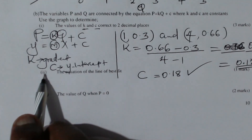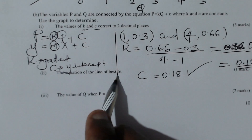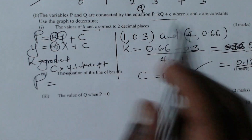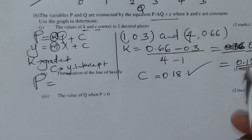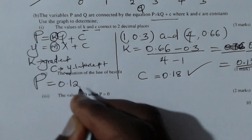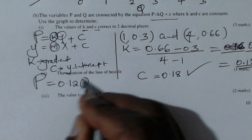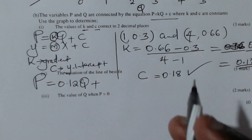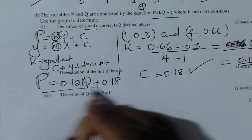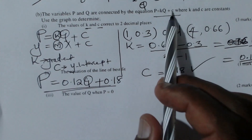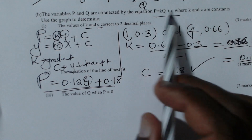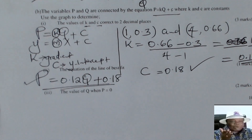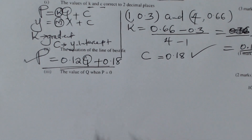To get the equation of the line of best fit, we substitute the values of k and c into p equals kq plus c. This gives p equals 0.12q plus 0.18. That is the equation of the line of best fit.